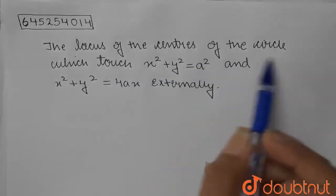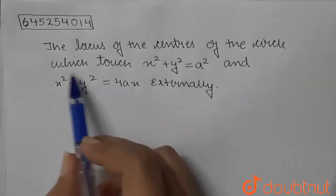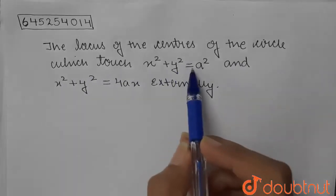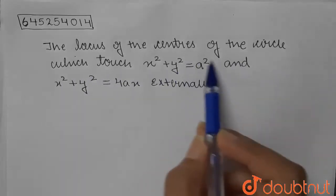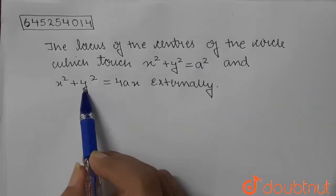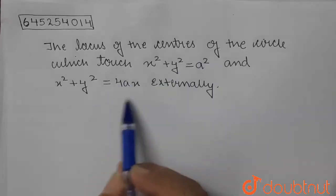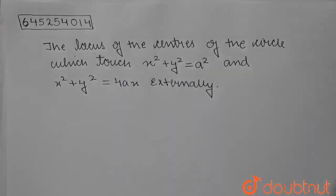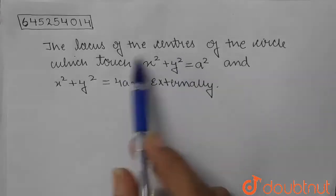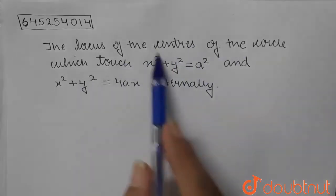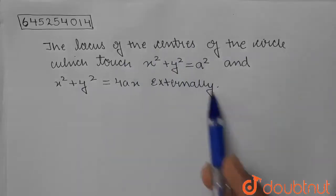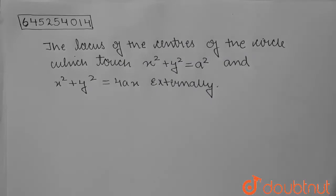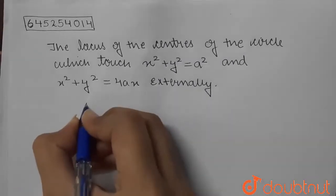The question is: find the locus of the centers of the circle which touches x² + y² = a² and x² + y² = 4ax externally. So we need to find the locus for the center of the circle which touches these two circles externally.